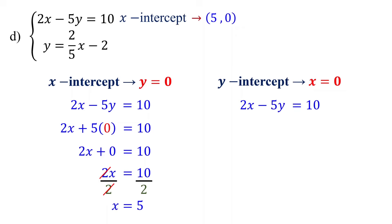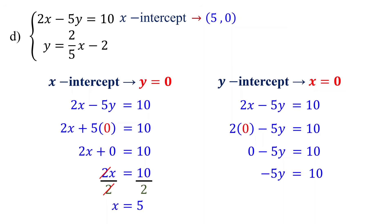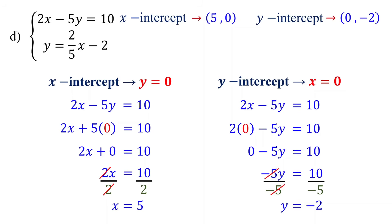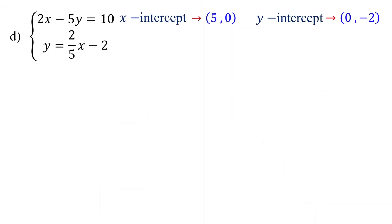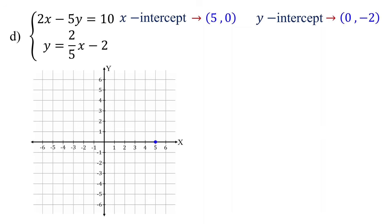To find the y-intercept, set x to 0. 2 times 0 equals 0, and we have -5y equals 10. To isolate y, divide both sides by negative 5, giving us y equals negative 2. Therefore, the y-intercept is (0, -2). Next, plot the points on the graph: plot (5, 0), which is the x-intercept, and (0, -2), which is the y-intercept, and then connect them with a straight line.